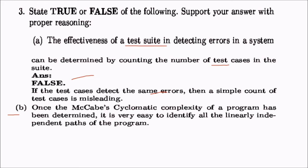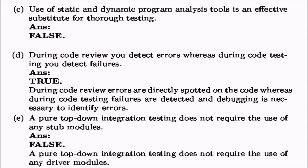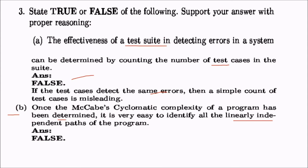Statement b: once the cyclomatic complexity of a program has been determined, it is very easy to identify all linearly independent parts of the program. This is false, because just computing the cyclomatic complexity would not make it easy to identify all linearly independent parts; there may be other possibilities.